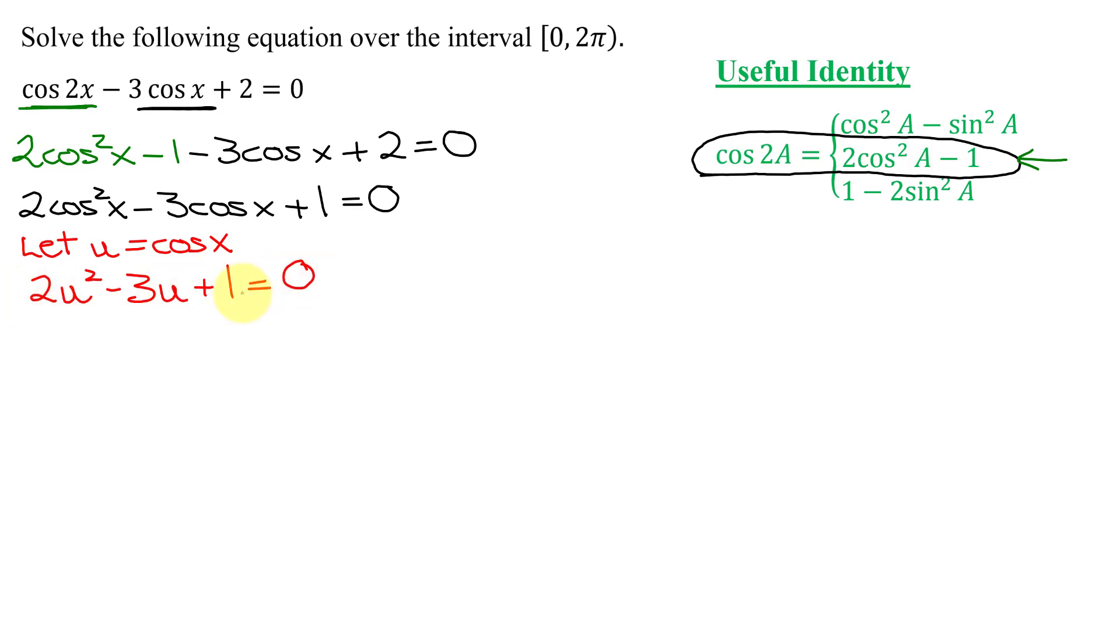This is a very simple one to factor. The numbers are very easy to do, so I'm just going to use trial and error. Multiply to 2u squared, I need a 2u and a u. Multiply to a positive means the signs are the same. Add to a negative, they're both negative. There's only one choice multiplying to 1, 1 and 1. Now let's check our factoring using FOIL. First gives me 2u squared. Outer negative 2u. Inner negative u. Those add up to negative 3u. Last gives me positive 1. So we've factored it correctly.